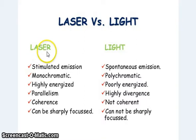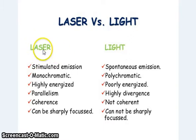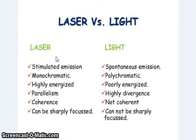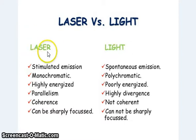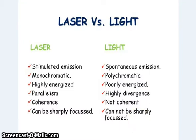Laser light is monochromatic in nature whereas ordinary light is polychromatic in nature. Laser light is highly energized whereas ordinary light is poorly energized. Laser light follows parallelism and ordinary light is highly divergent. Laser light is highly coherent whereas ordinary light is not coherent. Laser light can be sharply focused whereas ordinary light cannot be sharply focused.